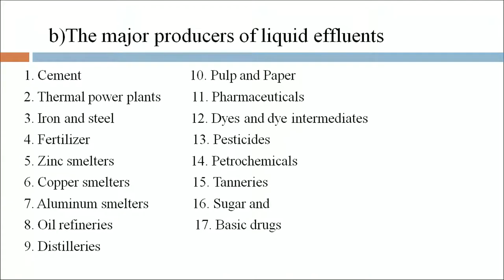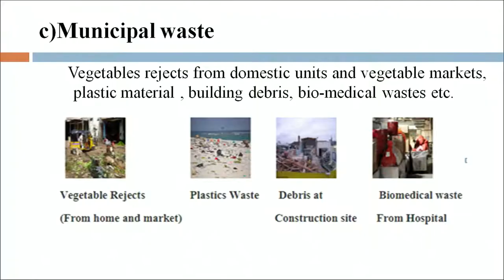The major producers of liquid effluents are cement, thermal power plants, iron and steel, fertilizer plants, zinc, copper and aluminum smelters, oil refineries, distilleries, pulp and paper industries, pharmaceutical, dyes and dye intermediates, pesticides, petrochemicals, sugar and basic drug industries. Municipal liquid waste includes vegetable rejects from domestic units and vegetable markets, plastic material, and biomedical waste.